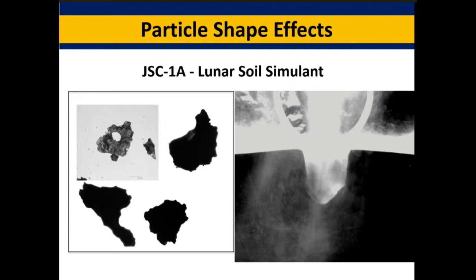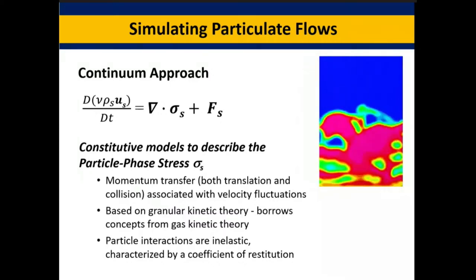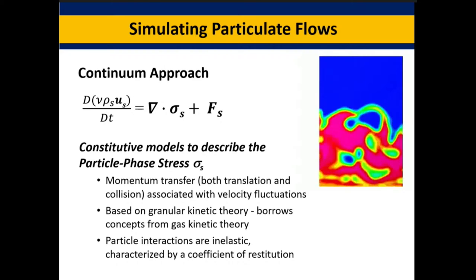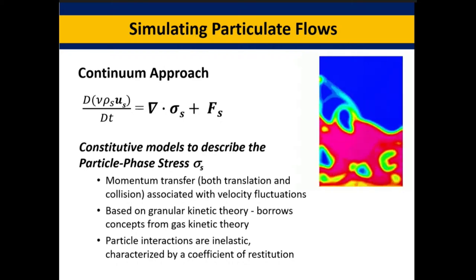The first type of modeling you could do, if you want to simulate a large-scale system, is a continuum approach for the particle phase — describing the particle phase much like we describe the motion of a fluid, needing a description for the effective stress of that particular material. The momentum balance looks much like the Navier-Stokes equation, with transient and convective terms on the left and the gradient of the solids stress on the right.